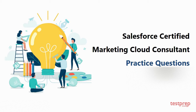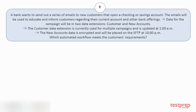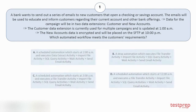Question number one: A bank wants to send out a series of emails to new customers that open a checking or savings account. The emails will be used to educate and inform customers regarding their current account and other bank offerings. Data for the campaign will be in two data extensions: Customer and New Accounts. The customer data extension is currently used for multiple campaigns and is updated at 1 AM. The new accounts data is encrypted and will be placed on the SFTP at 10 PM. Which automated workflow meets the customer's requirements? Your options are shown on screen.